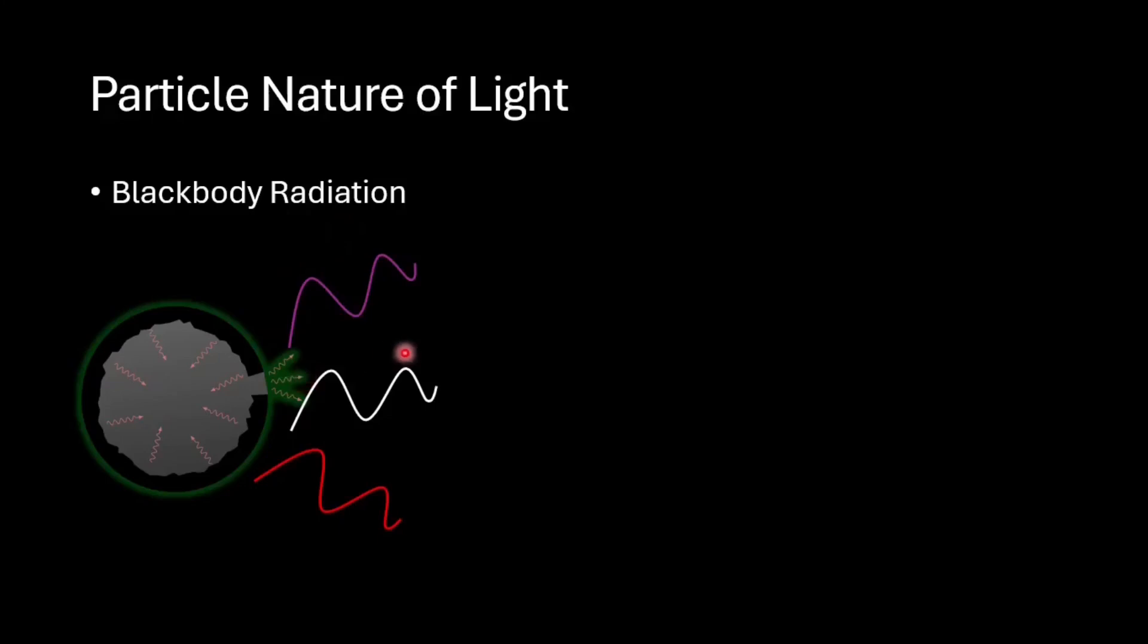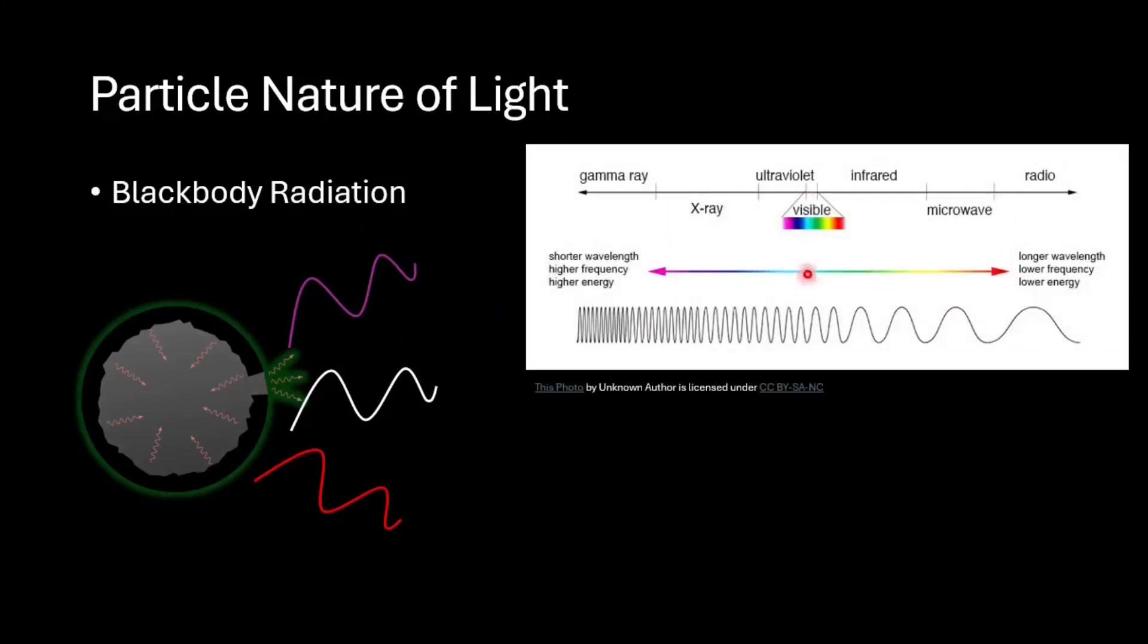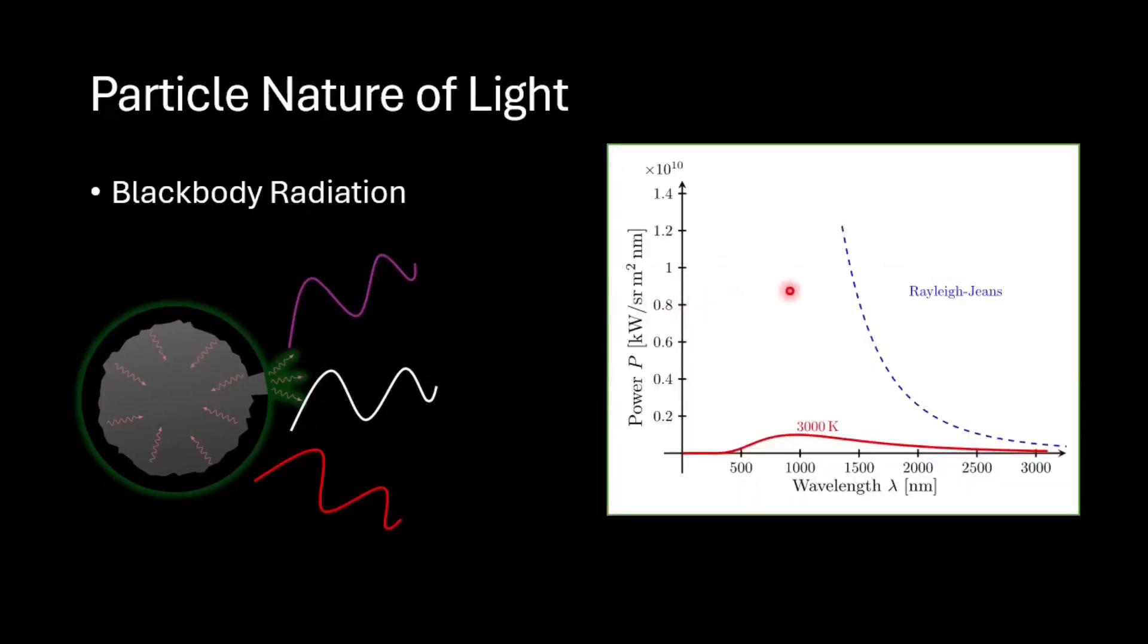However, several other experiments in the 20th century provided undeniable proof that light had particle nature, experiments such as black body radiation. A black body gives out radiation in the entire electromagnetic spectrum. Based on wave theory, black body radiation from any black body should have led to a significant amount of energy at shorter wavelengths and very less amount of energy at long wavelengths.